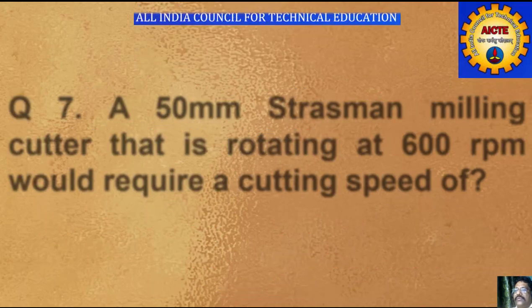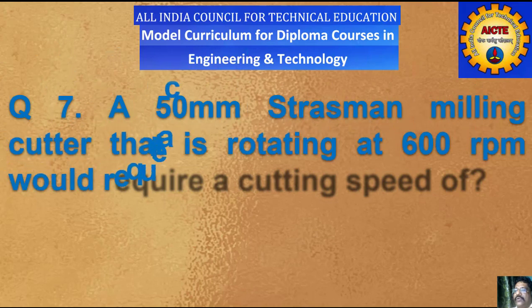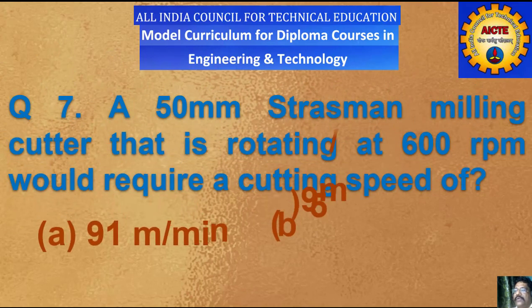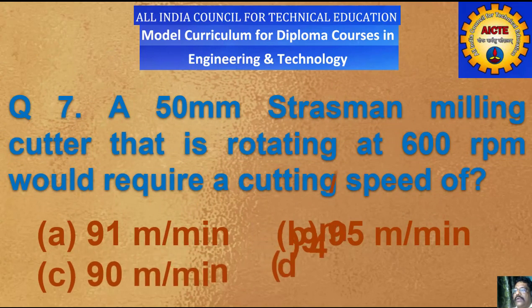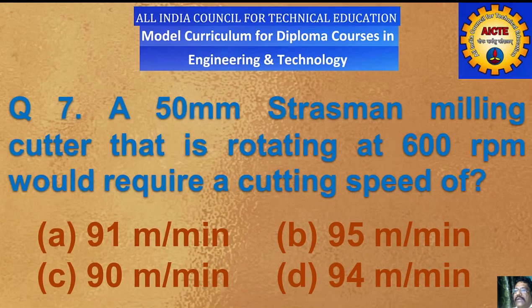Question number 7: a 50 mm face milling cutter rotating at 600 rpm would require a cutting speed of: A) 91 m per minute, B) 95 m per minute, C) 90 m per minute, D) 94 m per minute.